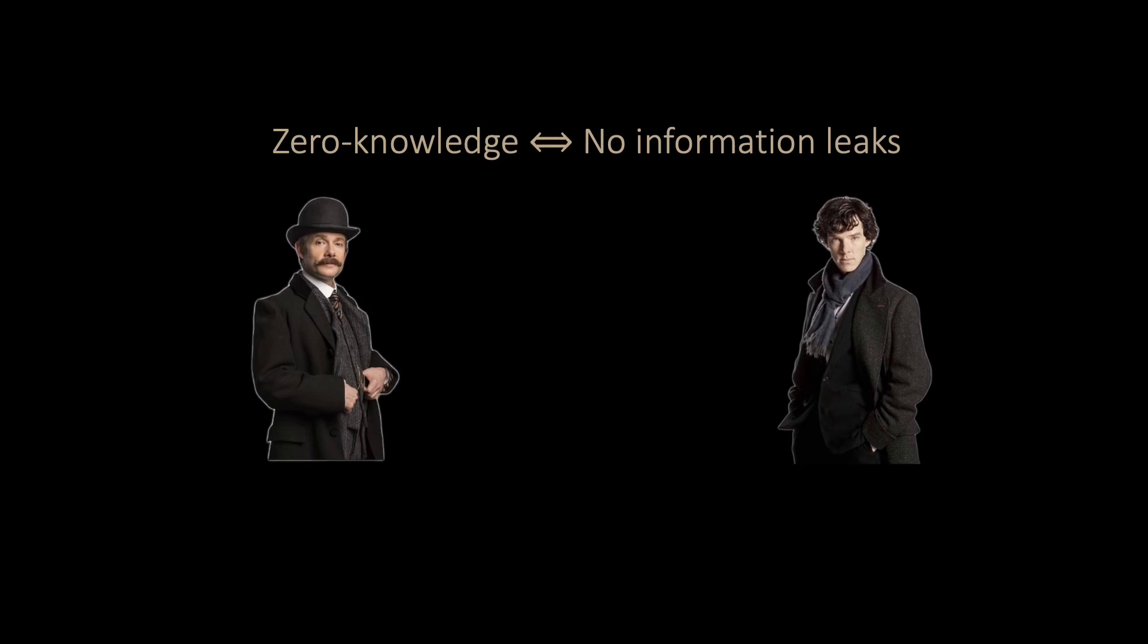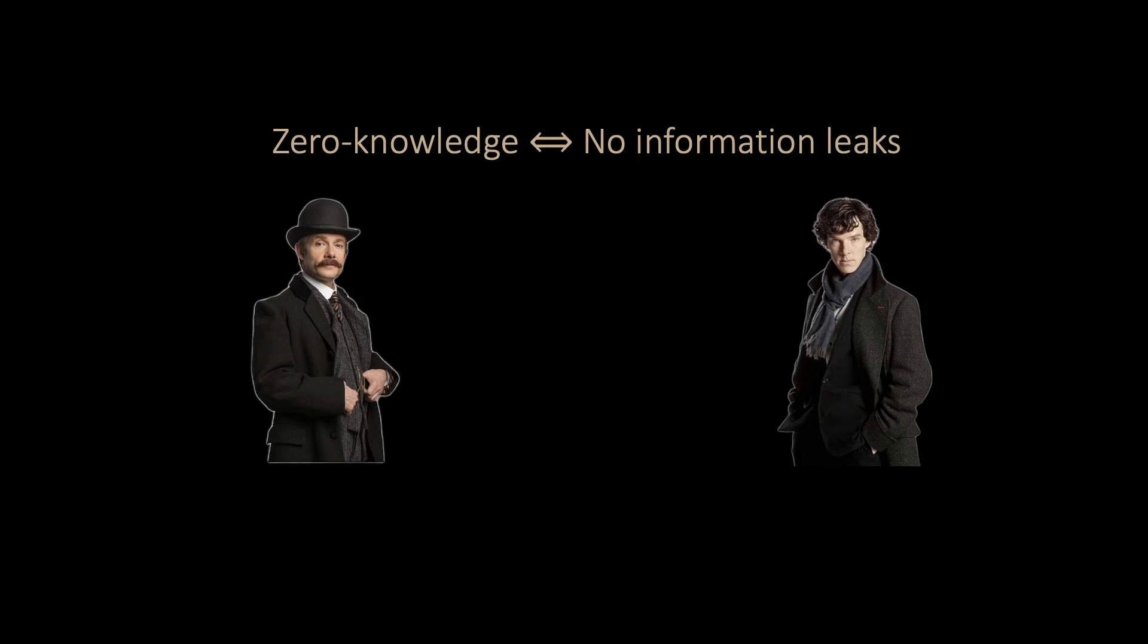However, as mentioned before, zero-knowledge is a stronger property and states that no information leaks. One can show that Hamiltonian cycle is zero-knowledge. However, to do so, we need a more formal model. Such a formal model exists, but we cannot explain the details in this video.